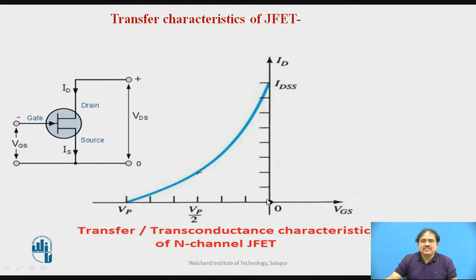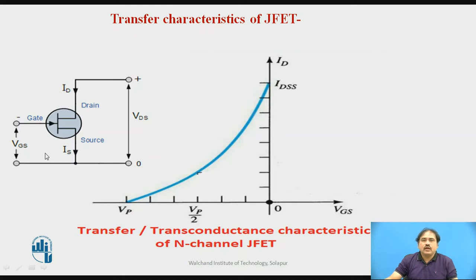The graph has the following nature: the X-axis shows the current ID and the Y-axis shows the voltage from gate to source. We draw this graph in the second quadrant because the voltage from gate to source is negative, which makes the gate-to-source junction reverse biased, so the graph appears in the second quadrant.